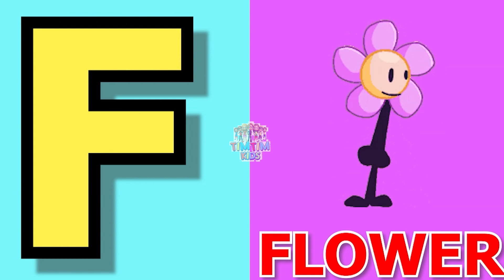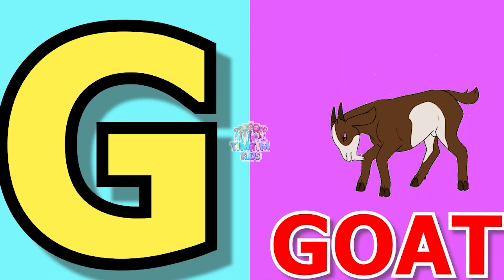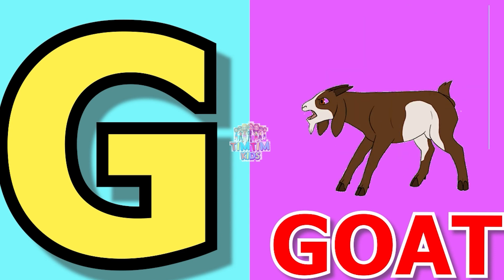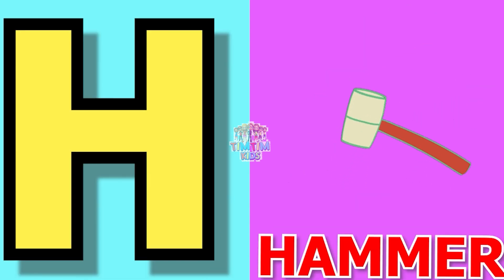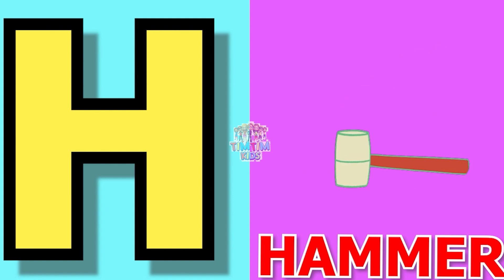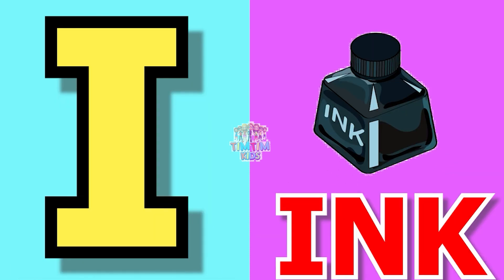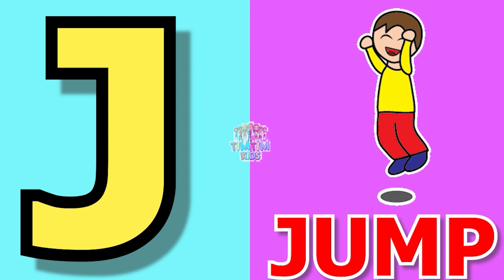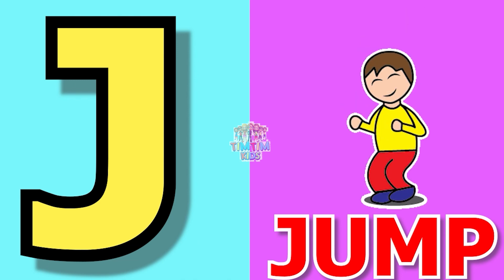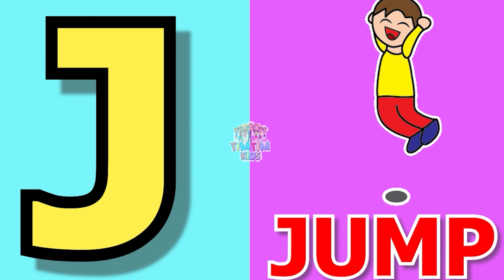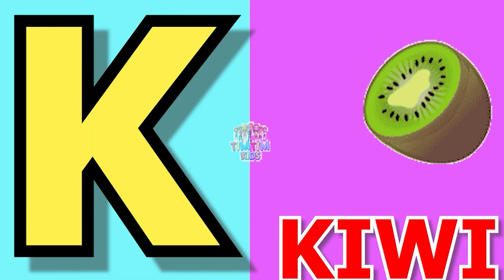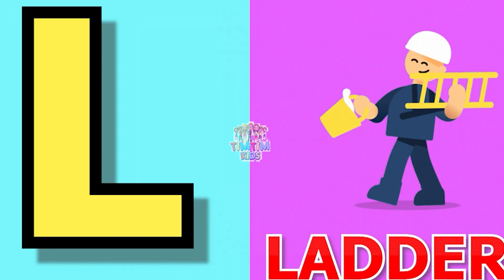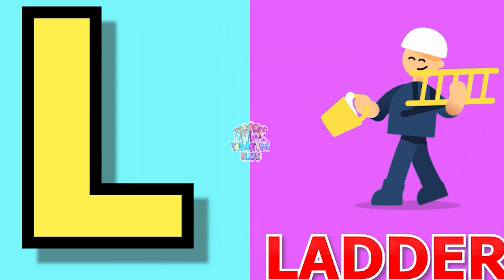G for goat, goat means bakri. H for hammer, hammer means thoda. I for ink, ink means shahi. J for jump, jump means kudna. K for kiwi, kiwi means kiwi. L for ladder, ladder means seedi.